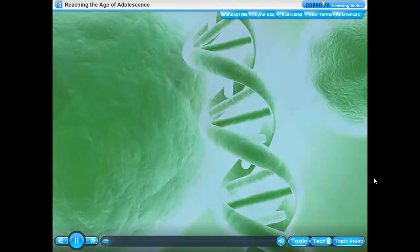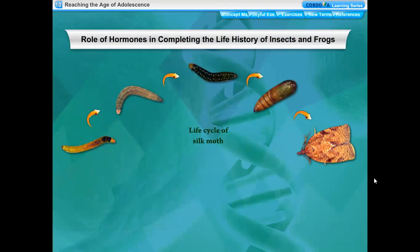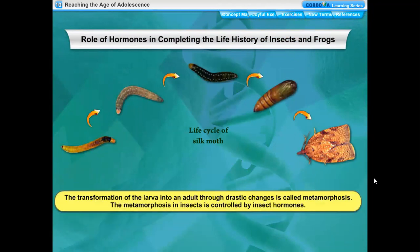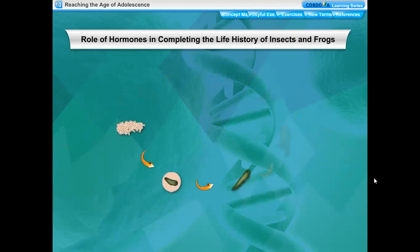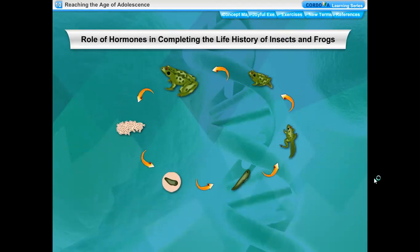Role of hormones in completing the life history of insects and frogs: we learned about the life cycle of the silk moth in Class 7. The larva or caterpillar has to pass through various stages to become an adult silk moth. The transformation of the larva into an adult through drastic changes is called metamorphosis. Metamorphosis in insects is controlled by insect hormones. Similarly, the tadpole passes through certain stages to become a frog. Metamorphosis in frogs is controlled by thyroxin. Iodine in water is required for production of thyroxin in the frog's body. If the water in which the tadpoles are growing does not contain sufficient iodine, the tadpoles cannot produce sufficient thyroxin and cannot complete metamorphosis.